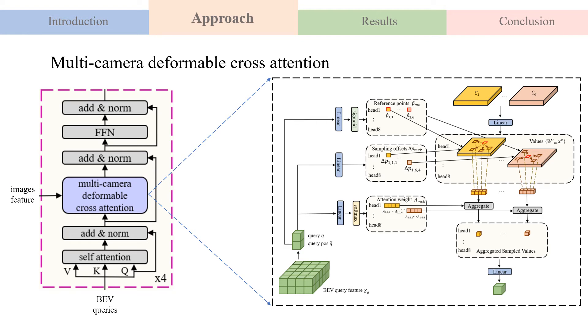In the BEV transformer decoder, we introduce a multi-camera deformable cross-attention module to replace the standard cross-attention, which links feature maps from multiple cameras to BEV queries.